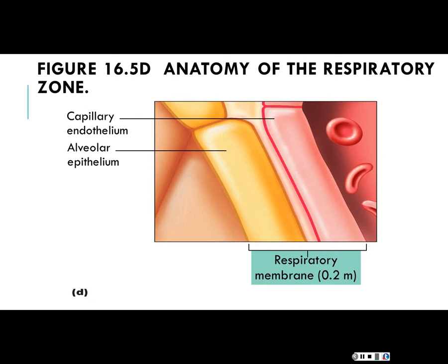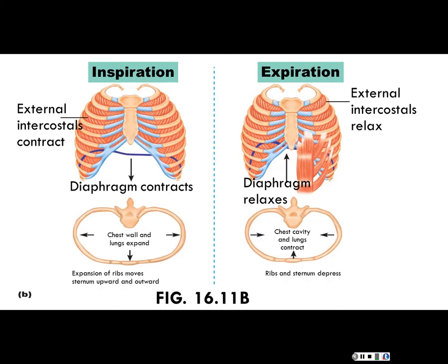Let's review the phases of inspiration. During inspiration, the diaphragm contracts and moves toward the abdominal cavity, while the intercostals contract to cause the ribcage to expand and elevate. This effectively increases the volume, which thanks to Boyle's Law tells us that air pressure will decrease, so air moves into the lungs down its pressure gradient.